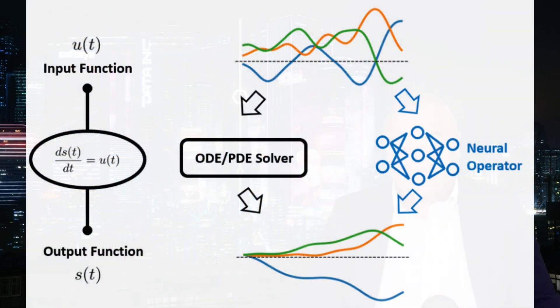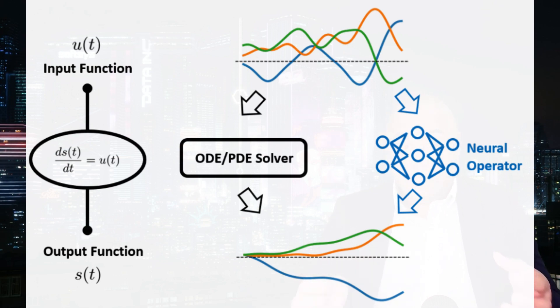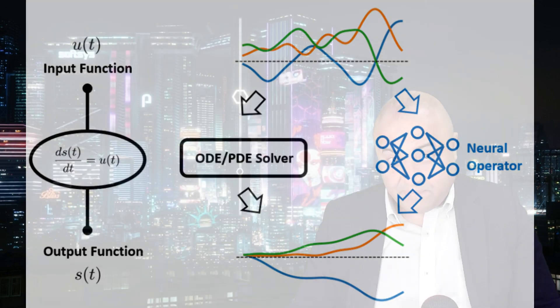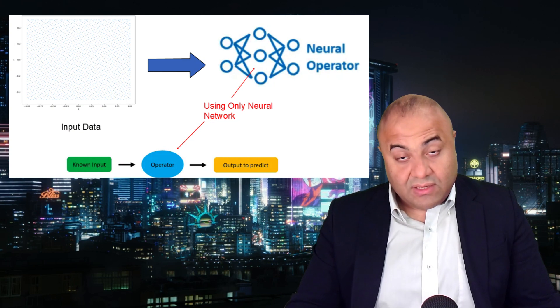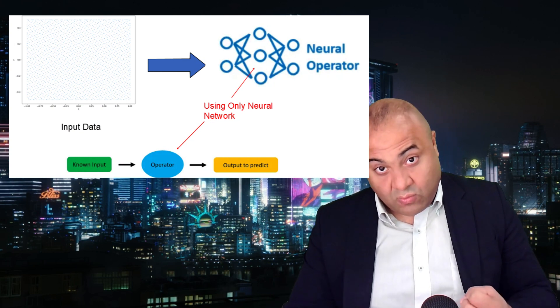A deep neural operator is a network comprised of multiple layers of a neural network designed to perform mathematical operations. This mathematical operation can be anything — from integration, differentiation, or even the simple prediction of a function value. For example, we input x and we get a specific y.